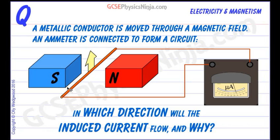A metallic conductor is moved through a magnetic field and an ammeter is connected to form a circuit. When you move a metal conductor through a magnetic field so that it cuts through the magnetic field lines, you will induce an EMF.